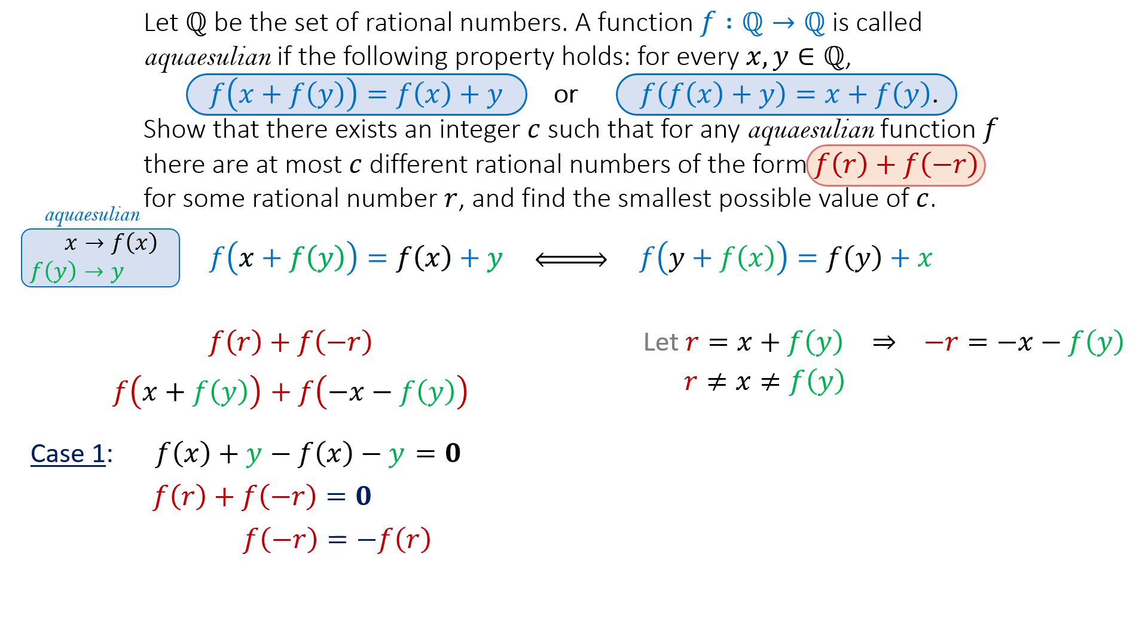This means f(-r) = -f(r). So what if f(-r) doesn't equal -f(r)? In this case, we consider what happens if -x becomes f(-x). Then the first part stays the same, f(x) + y, and the second part becomes f(-x) - y.